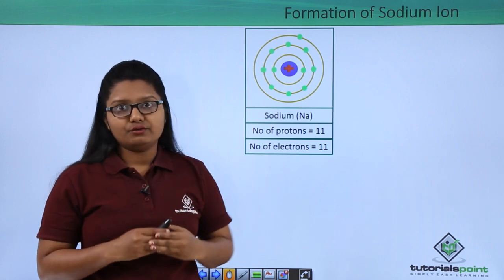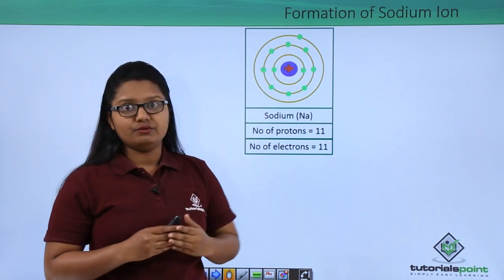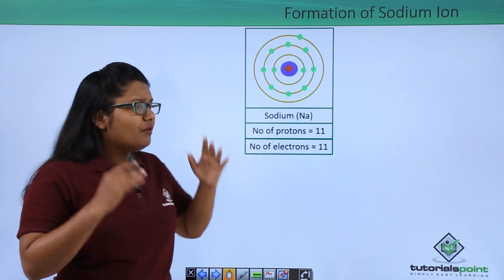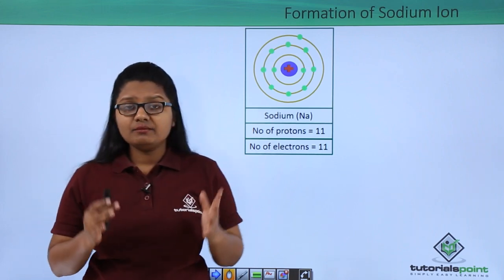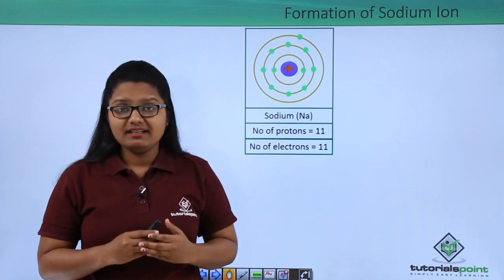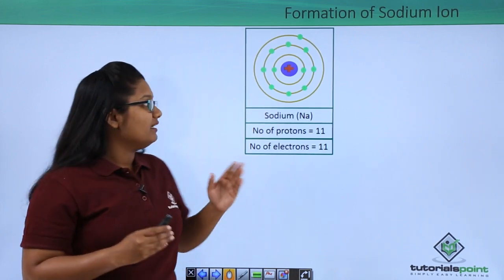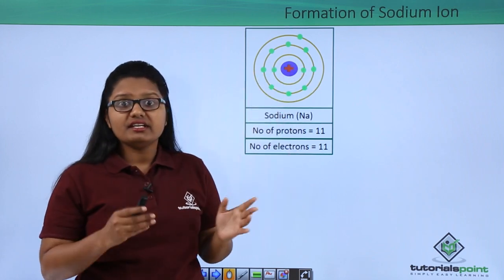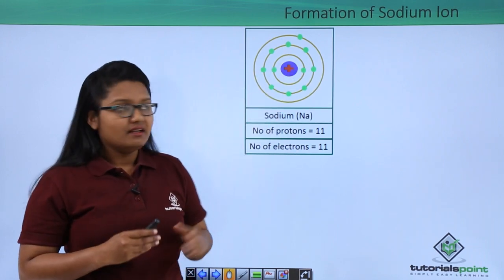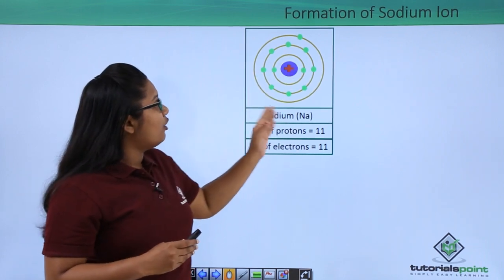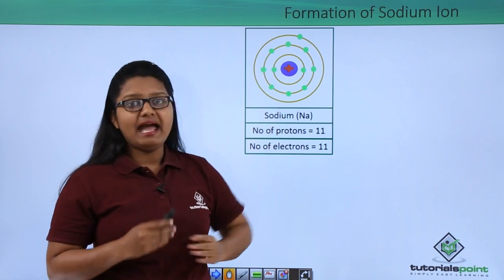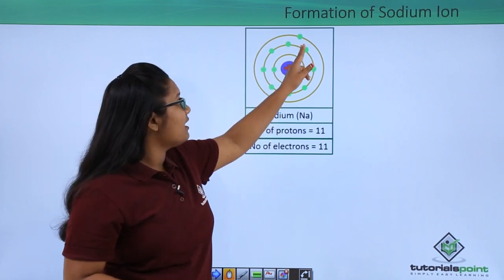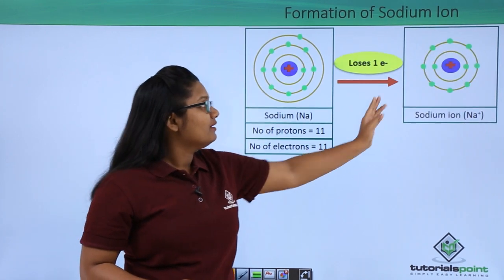In order to be completely filled it has to have eight electrons, but it has only one, so it is not completely filled. Every atom of an element has a tendency to be fully filled — it generally prefers to be fully filled. So in order to do that, this sodium atom loses this extra electron.